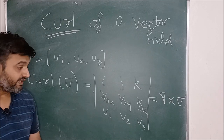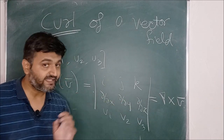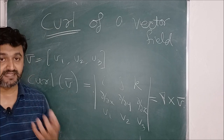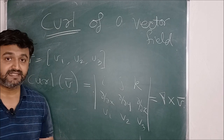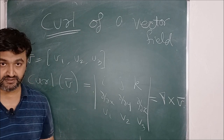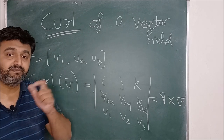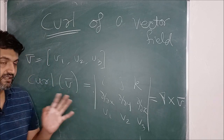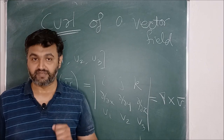Another important thing: the output of curl is a vector, so it has both magnitude and direction. The direction represents the axis of maximum rotation, and the magnitude represents by how much the field will rotate. That is the geometrical interpretation of curl of a vector field.